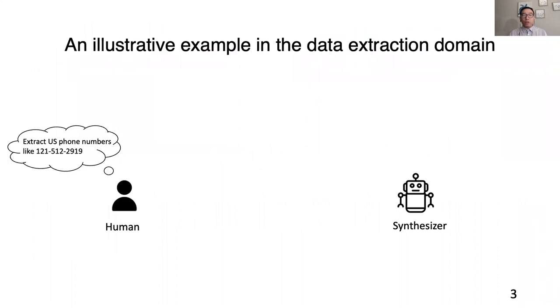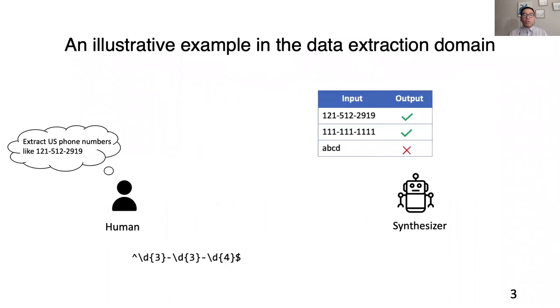For example, to generate a program that only matches US phone numbers, the user can add some positive and negative examples. The synthesizer will then generate a program like a regular expression that matches the two positive examples and does not match the negative example.